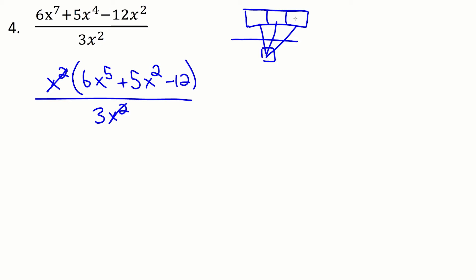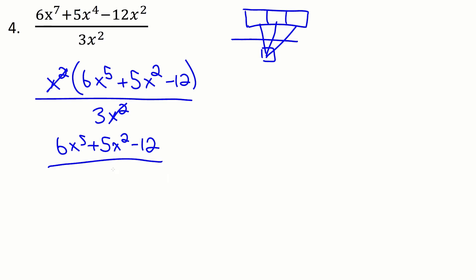Since the 3 couldn't come out, I can't do that division by 3 because the 3 can't divide into every term cleanly — it can divide the first and the third, but it can't divide the 5. So overall we have to leave it where it is. Simplifying this out, we're going to have 6x to the five plus 5x squared minus 12, over 3. To keep it as one fraction, this is as far as we can go.